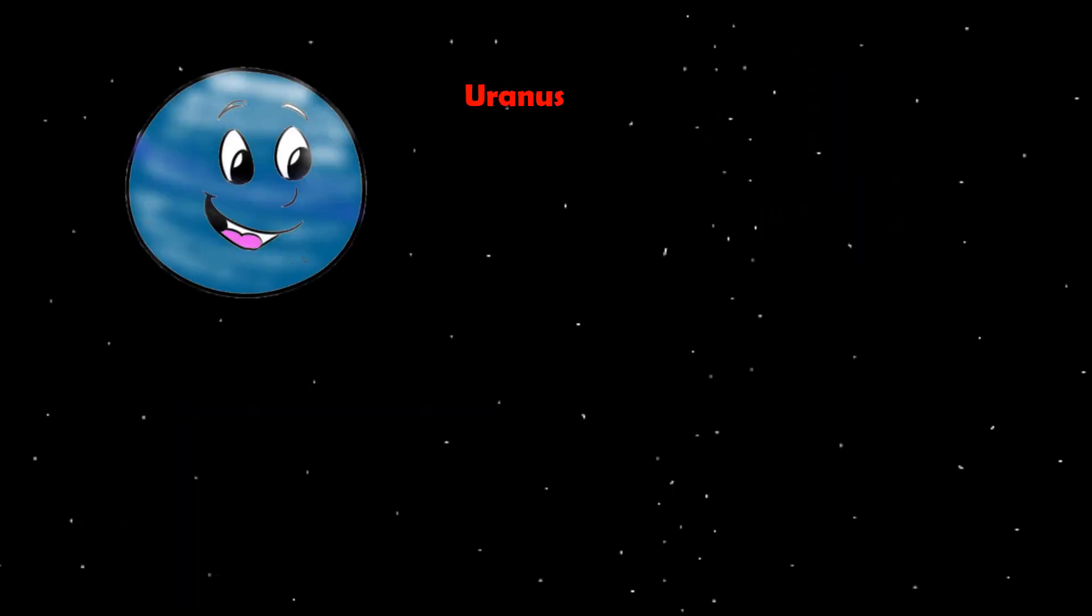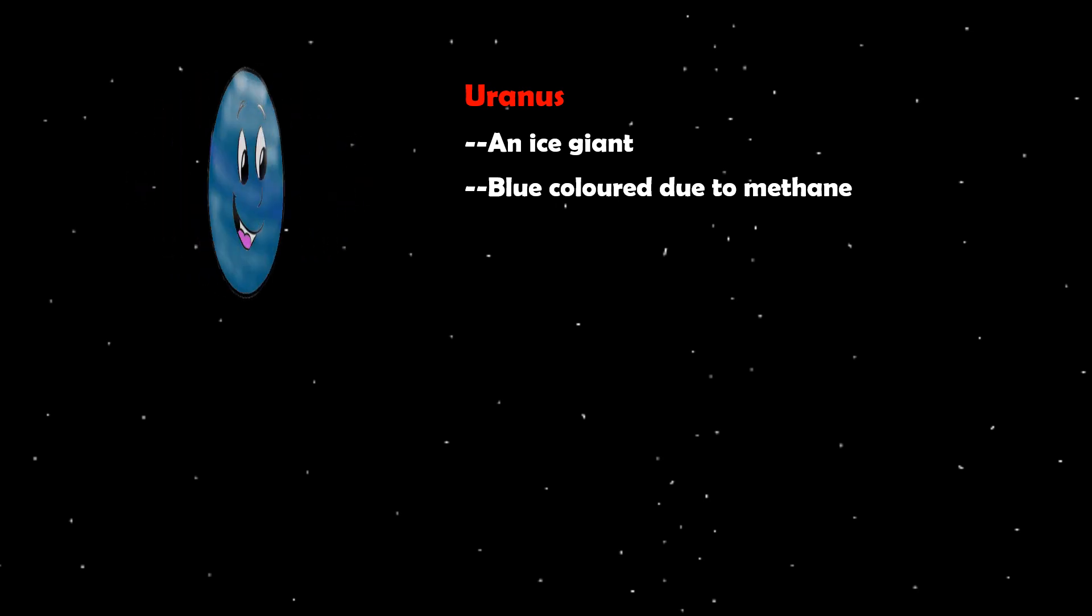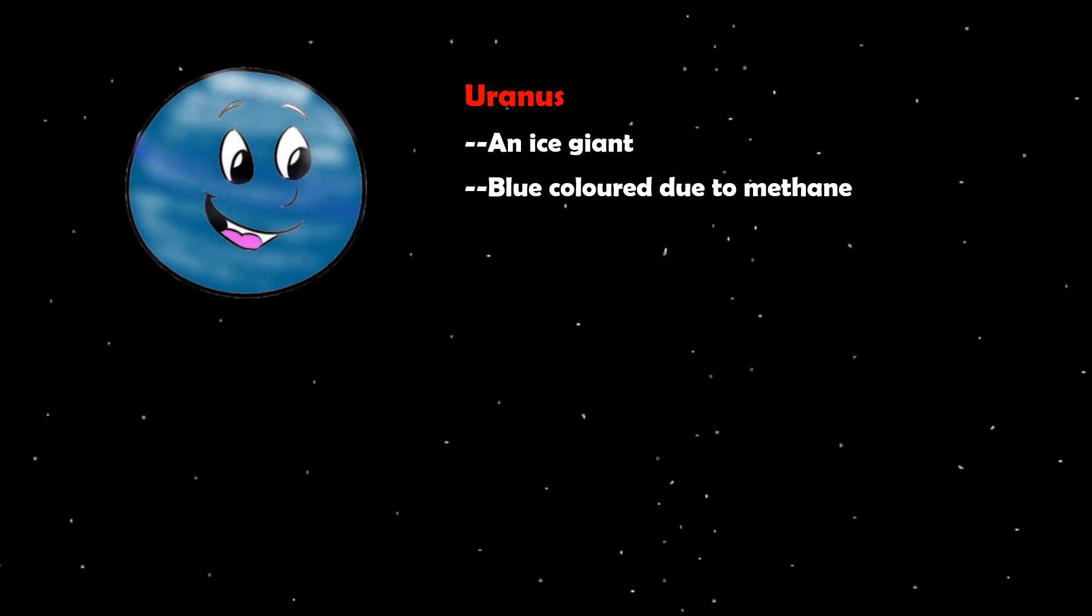Uranus is the seventh planet from the Sun. It is an ice giant. It looks blue due to the presence of a compound called methane in abundance. It also has faint rings surrounding it. It has 27 moons.